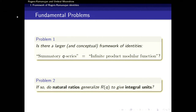That's only one function — R. If Rogers and Ramanujan found one function with this special property, you have to ask: did they find a glimpse of a theory, or is the Rogers-Ramanujan function the magical function, like the exponential? The first fundamental problem, which has been around for 100 years, is: is there a larger and conceptual framework of identities like that? Is there a framework where you can find these strange summatory series which automatically give you infinite product modular functions? And if so, are there certain natural pairs whose ratios naturally generalize the continued fraction and have the property that all their CM values are also algebraic integer units?